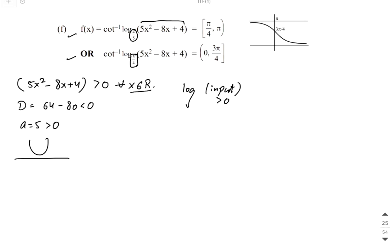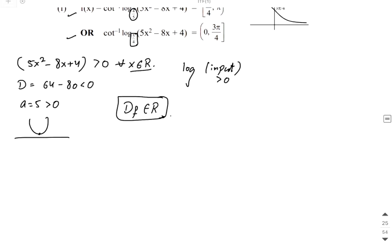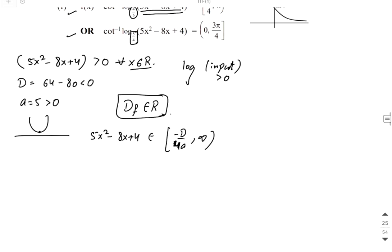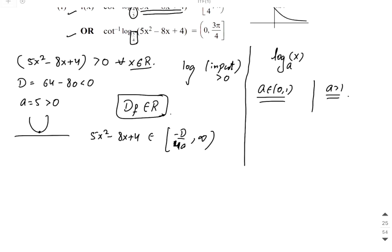The input to the log function should always be positive. Since this is an upward parabola, the minimum value of 5x² minus 8x plus 4 occurs at minus D by 4a. For log base A: if A is between 0 and 1, it is a decreasing graph; if A is greater than 1, it is an increasing graph. As x increases, y increases for base greater than 1.